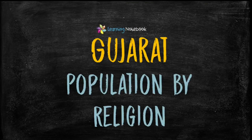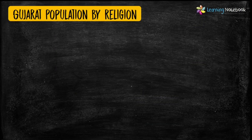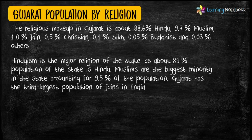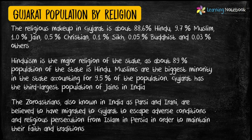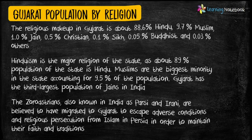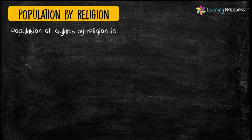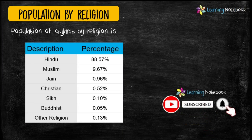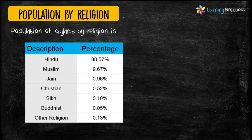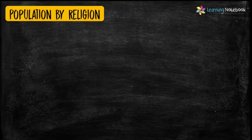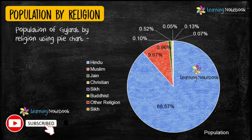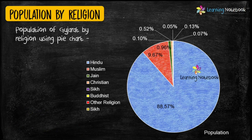You can also include the population of Gujarat by religion. A pie chart is another beautiful way of representing the given data. So you may use a pie chart to show the population of Gujarat by religion in your Maths Art Integrated project.